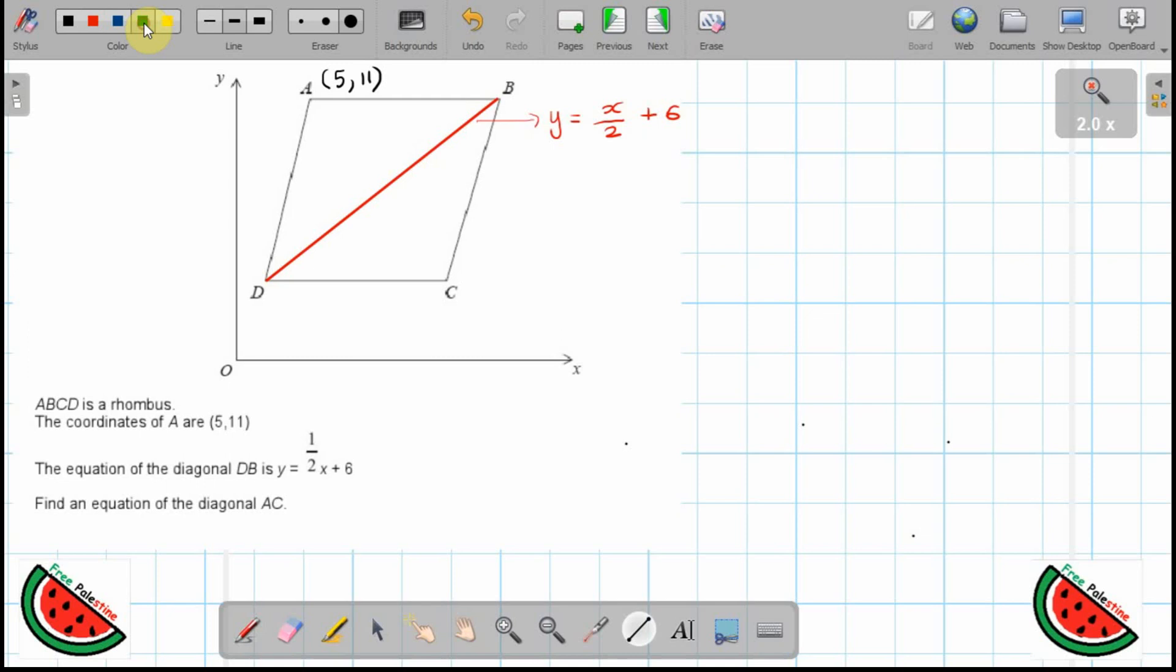And find the equation for the diagonal AC. The diagonal AC is like such. Now to solve this question we need to know some of the properties of a rhombus. The rhombus is a quadrilateral with four equal sides and its diagonals bisect each other at 90 degrees, so they're perpendicular.